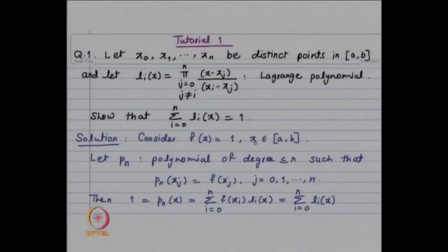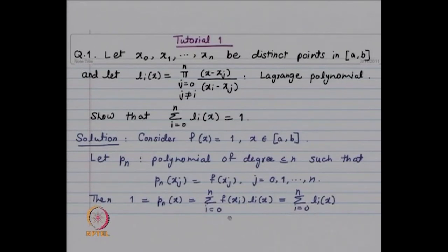For f(x) = 1, it is a constant polynomial. When you look at p_n as a polynomial of degree less than or equal to n interpolating the constant function, that is going to be the function itself. So, choose f(x) = 1 for x in [a, b] and let p_n be the interpolating polynomial such that p_n(x_j) = f(x_j). Then p_n(x) = summation of f(x_i) l_i(x), p_n(x) = 1, and f(x_i) = 1, hence summation of l_i(x) = 1.